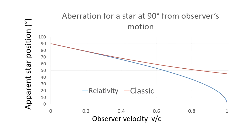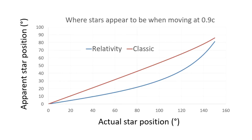Notice that there is not much difference between classical theory and relativity until about 30% the speed of light. This other chart shows the apparent position of stars for an observer traveling at 90% the speed of light. The x-axis lists the real angular position with respect to the direction of travel, and the y-axis the apparent position.